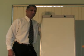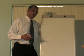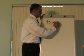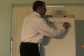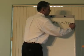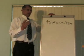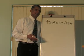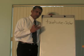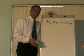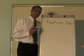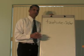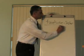Kia ora anō. We're going to look at using tuahine, which means sister. When I'm talking about my older brothers or younger brothers, I use tuakana or taina. But when I'm talking about my sisters, regardless of what age they are — older or younger than me — I use this word here: tuahine.